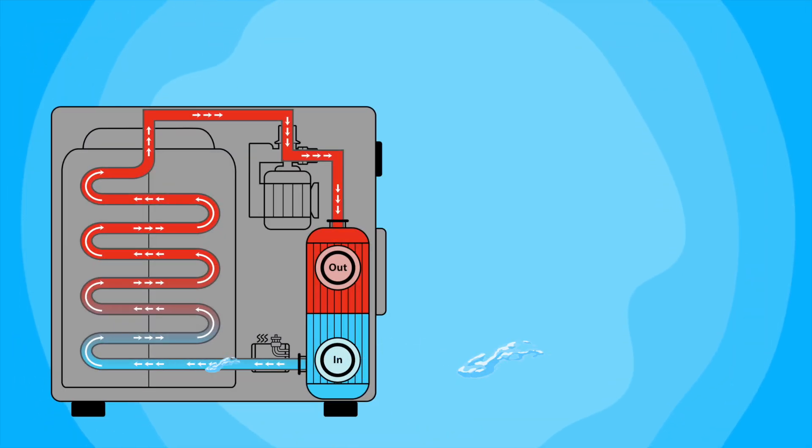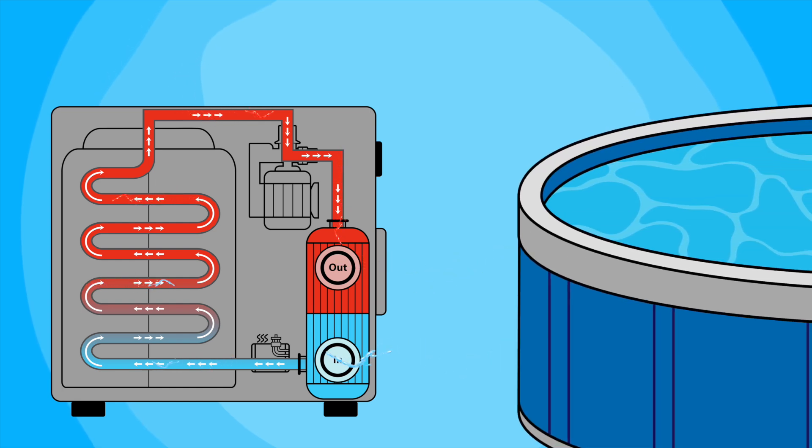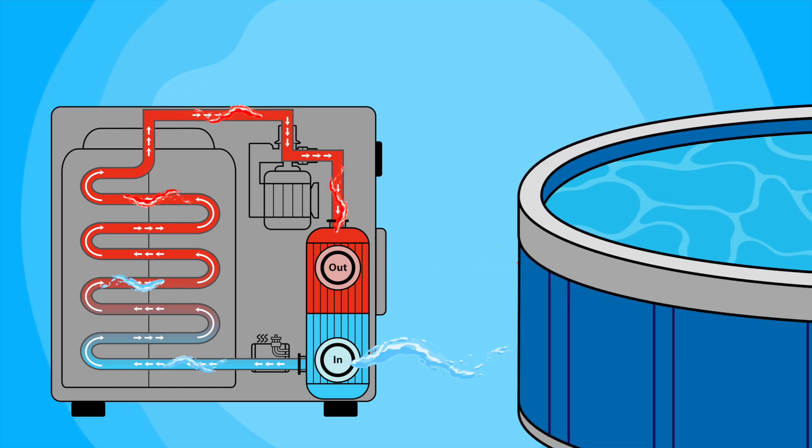Meanwhile, the cooler pool water is circulated through a heat exchanger, where it absorbs the heat from the compressed refrigerant gas. This exchange of heat causes the refrigerant gas to condense back into a liquid form. The now warmed water is then pumped back into the pool, and the process repeats.